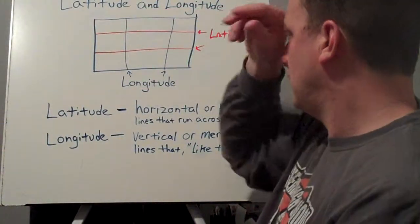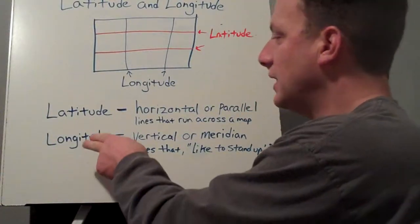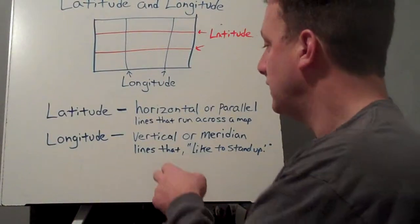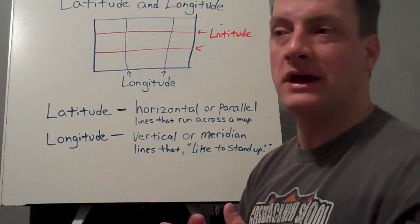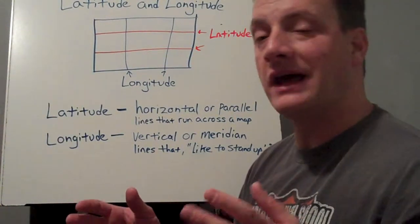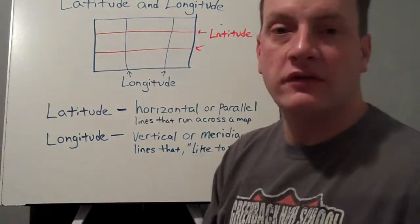Longitude lines are the vertical or meridian lines. They're often called these are lines that like to stand up. I told you the story about a former student of mine that explained to the class that lines of latitude have an attitude—they're always laying down. Lines of longitude are like a fence post—they're always standing straight up.